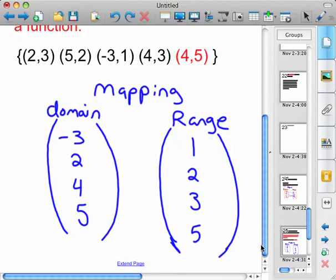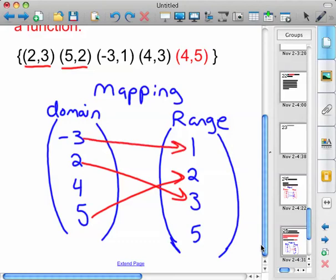If you have, I'll list my domains and my ranges again, just like we did before, and do the mapping. So two goes to three, five goes to two, negative three goes to one, four goes to three, and then four goes to five.